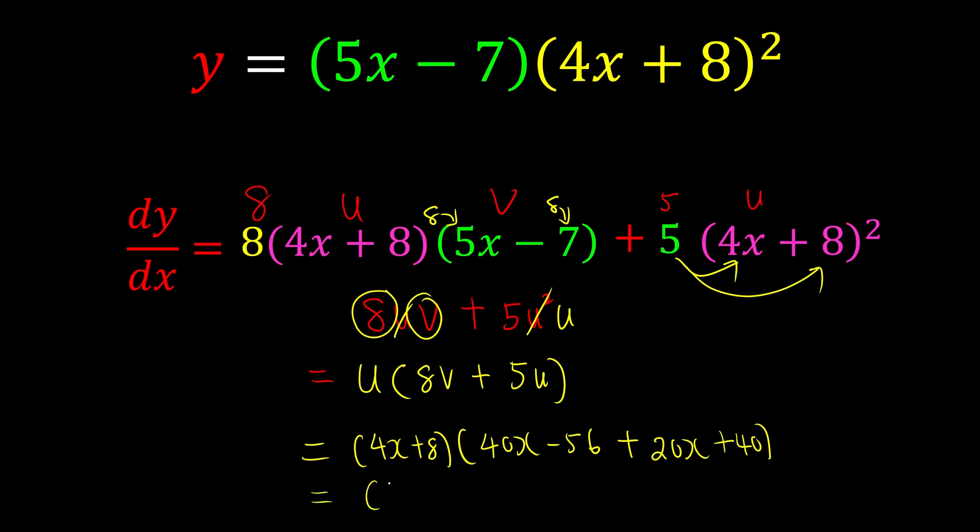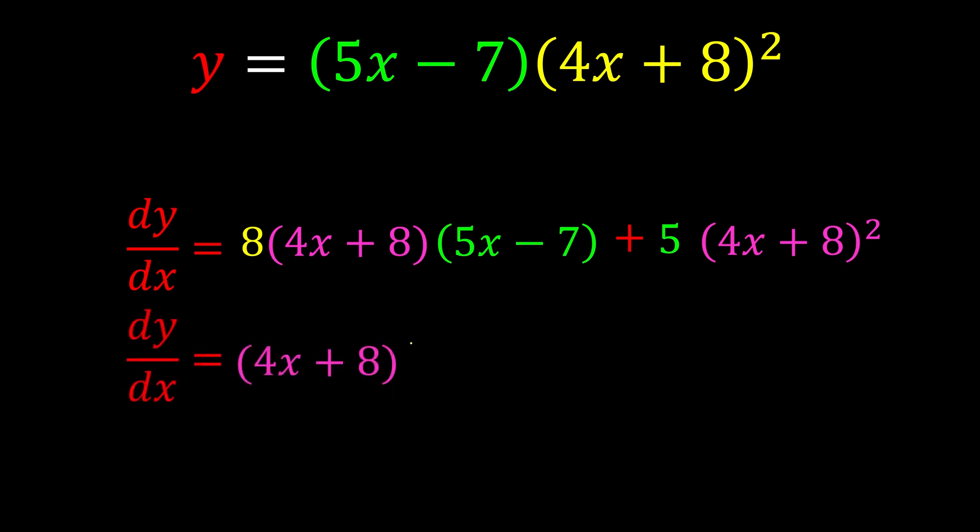Then we just need to simplify it: 4x + 8. And 40x + 20x is 60x - 16. This will be our simplest version. Then we are done.